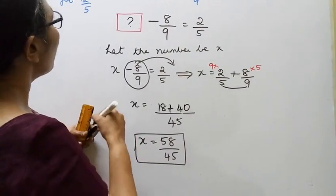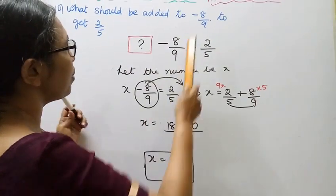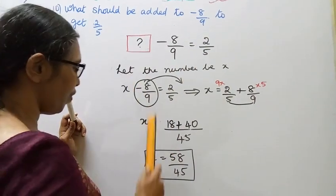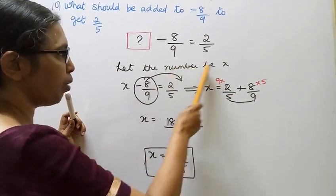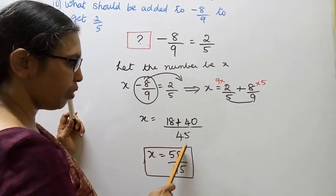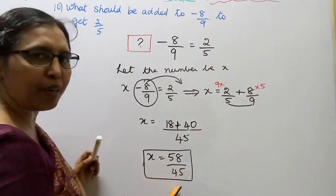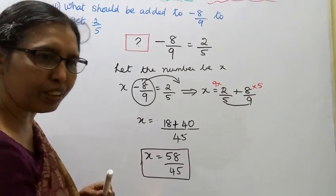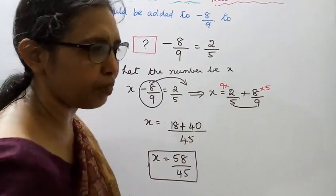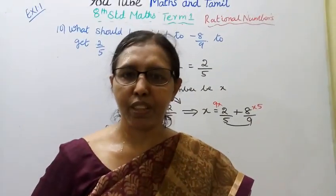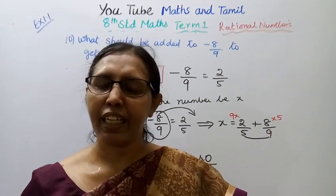What should be added to minus 8 by 9 to get 2 by 5? The answer is 58 by 45.